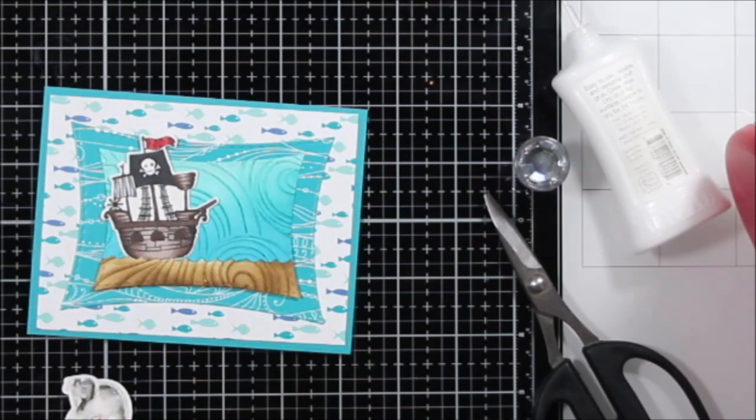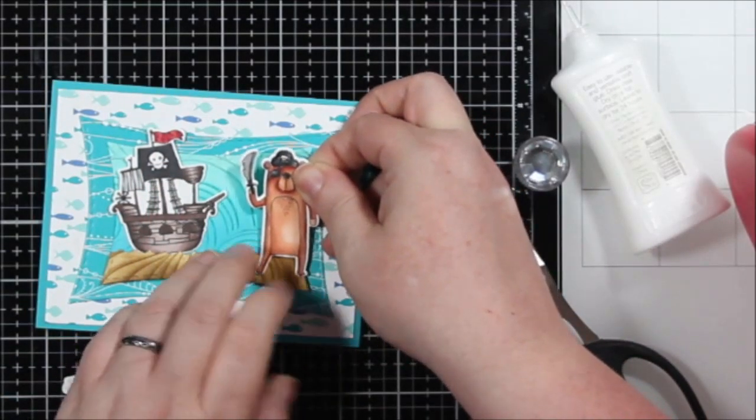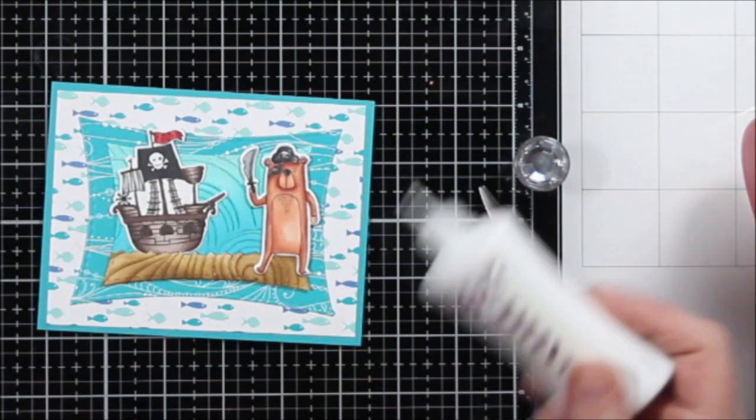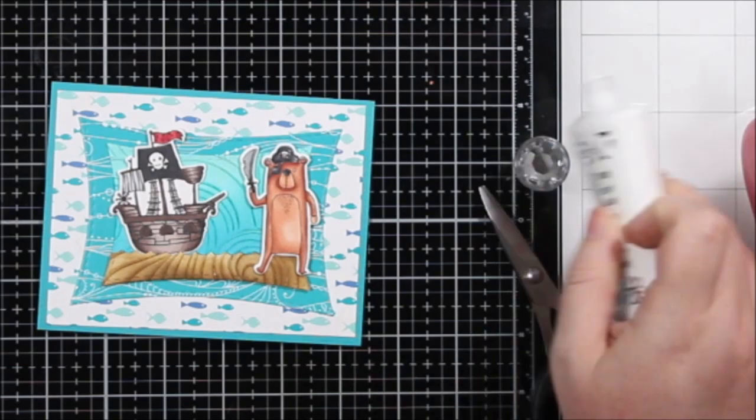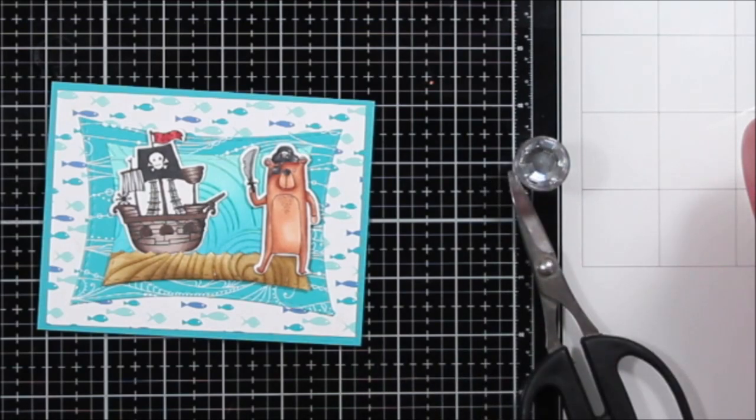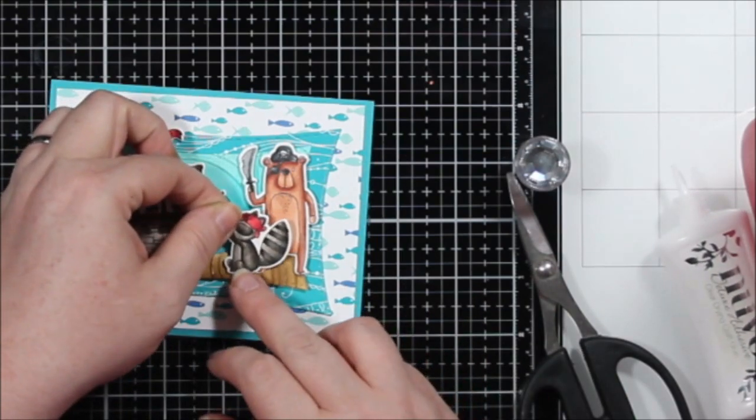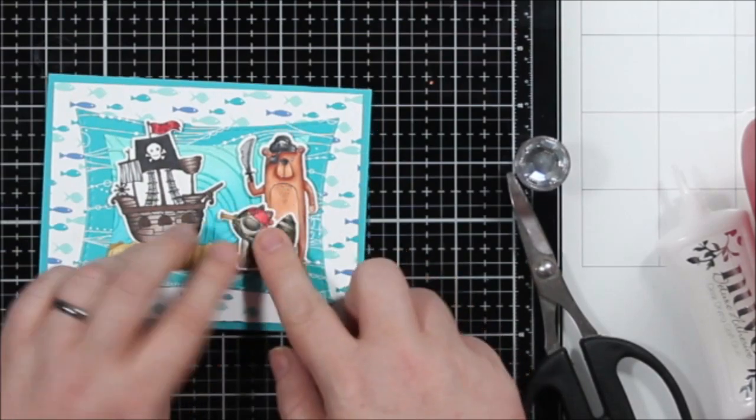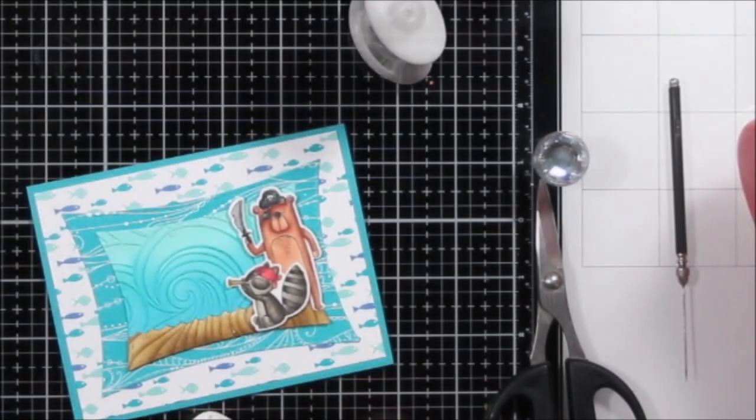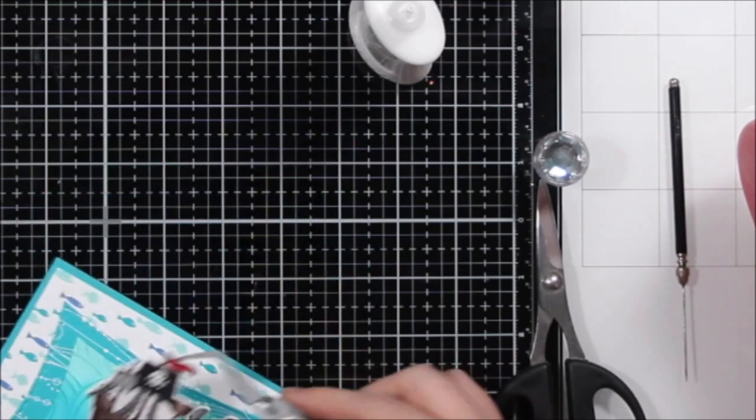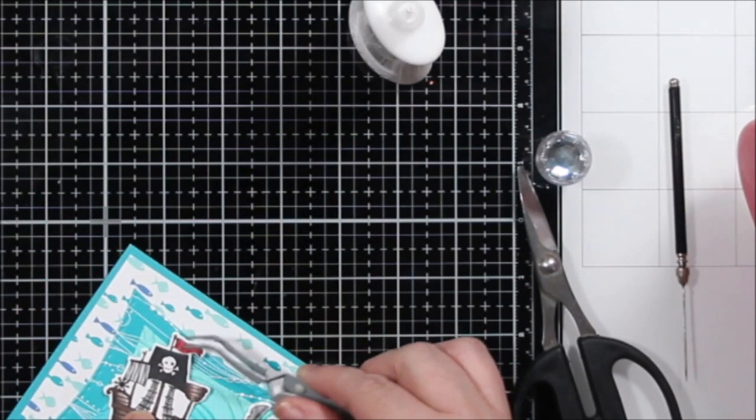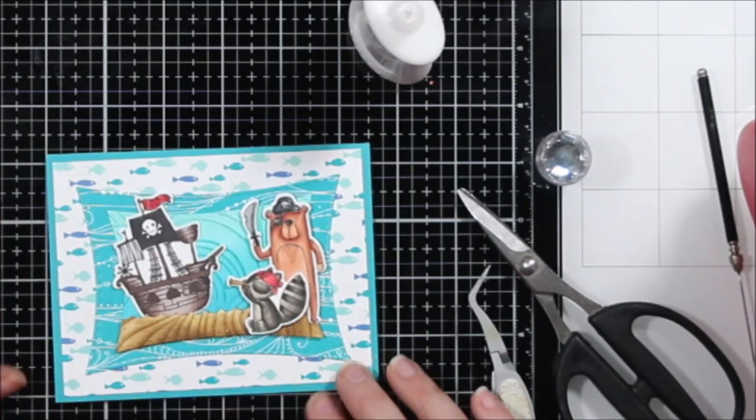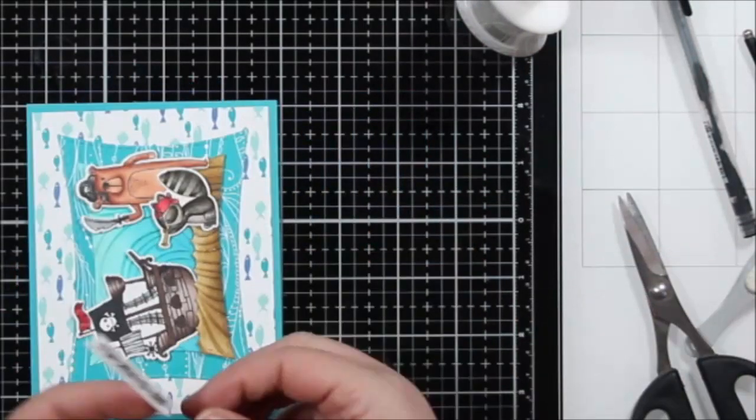I popped up the bottom piece of this with some foam tape so that I could tuck that ship in. I'm going to go ahead and mount all of my little critters here. The bear has foam tape on the top of him, and then he is adhered with liquid adhesive by his feet. And I'm going to do kind of the same with this raccoon. He's got a little piece of foam tape behind his head. And then the rest of him is adhered with liquid adhesive. The pirate ship is going to be adhered directly to the background with liquid adhesive. I use Nouveau. I like that one. It's nice on my hands.